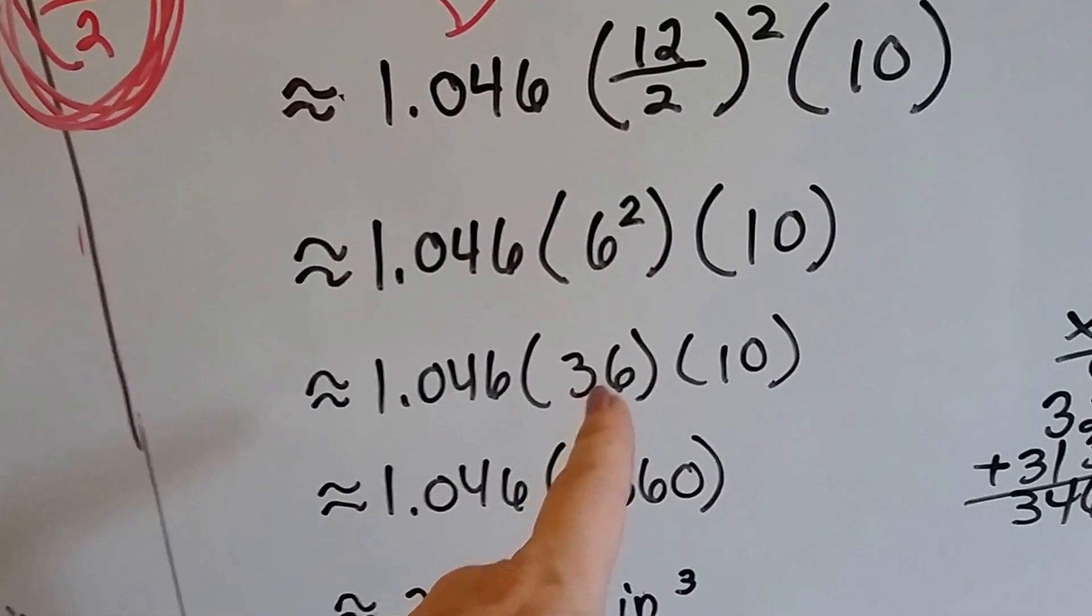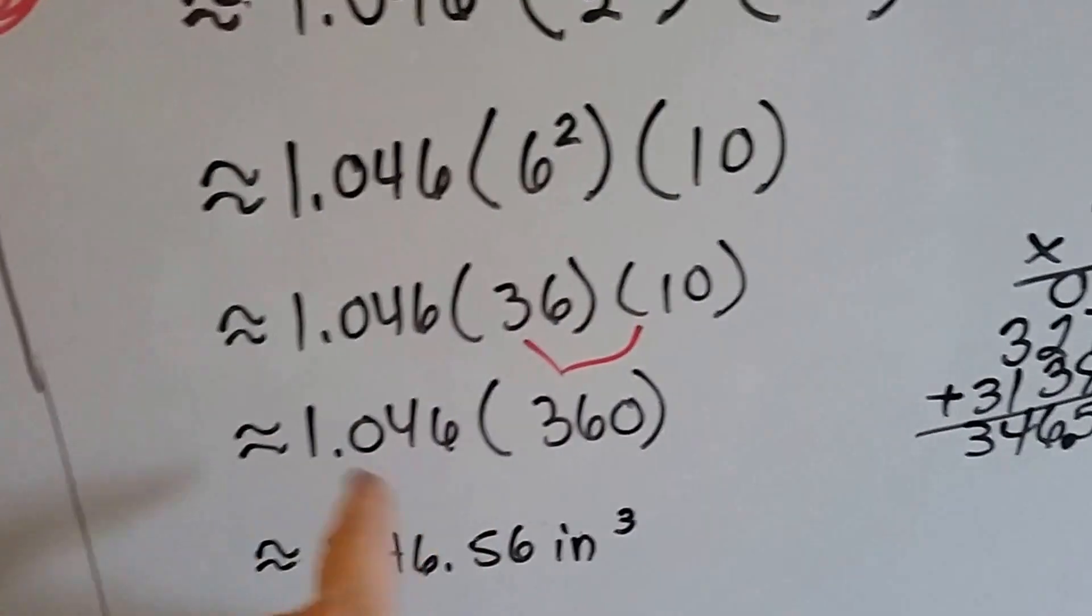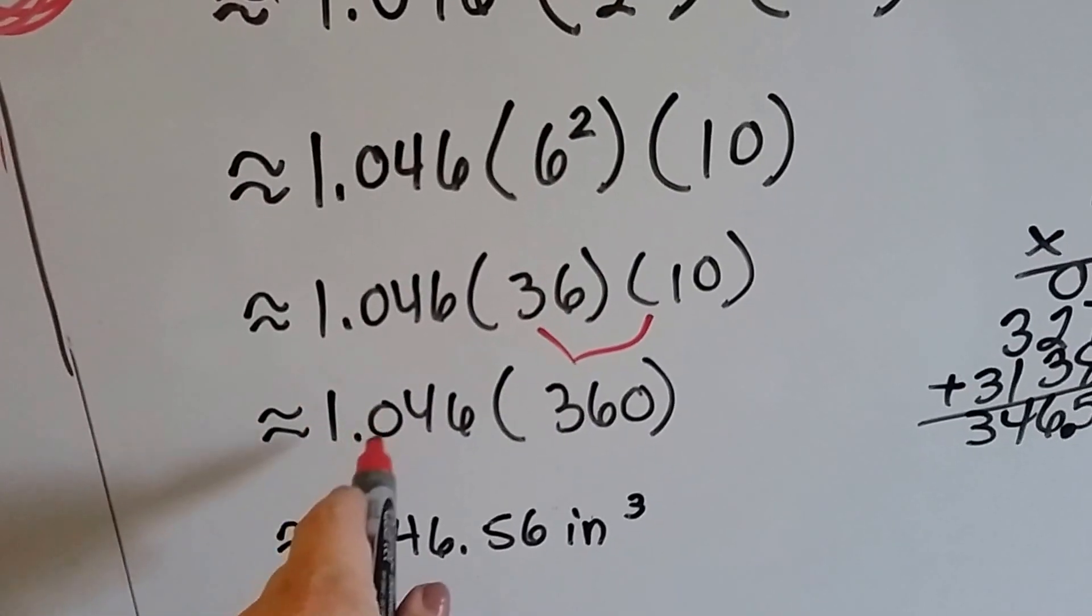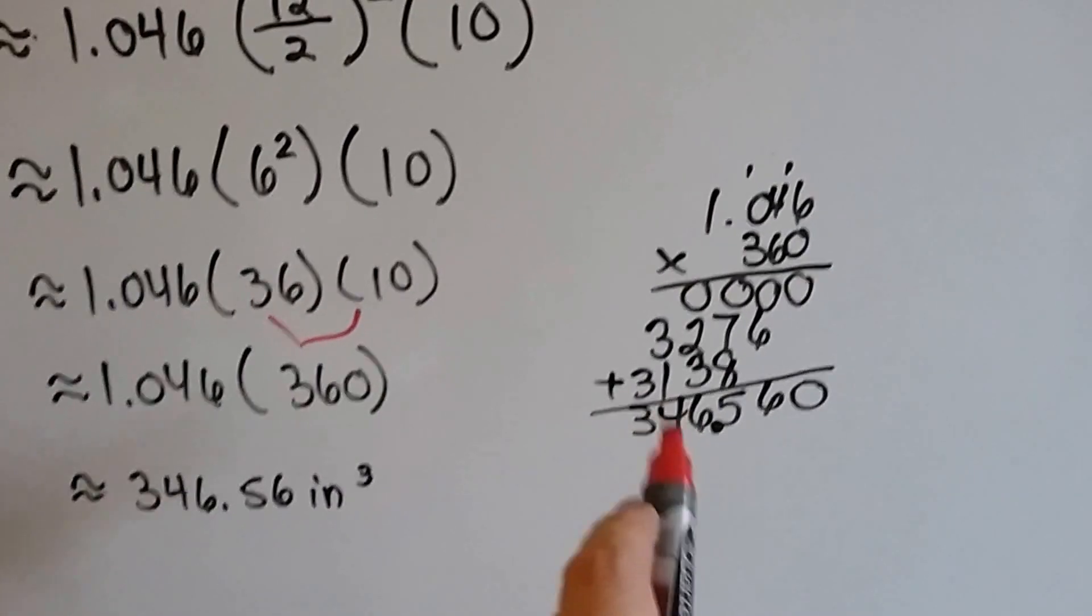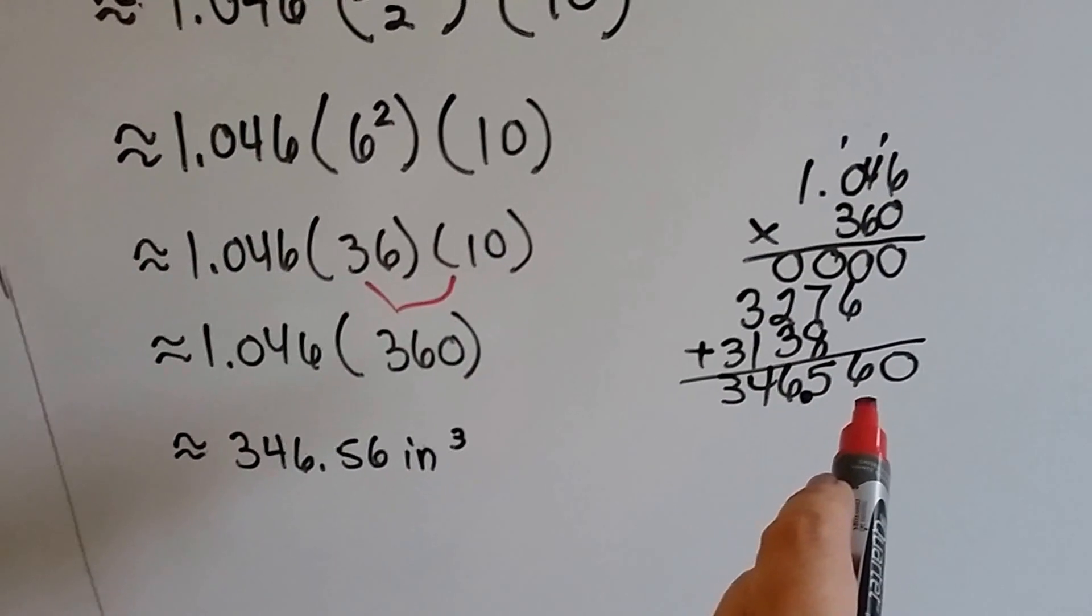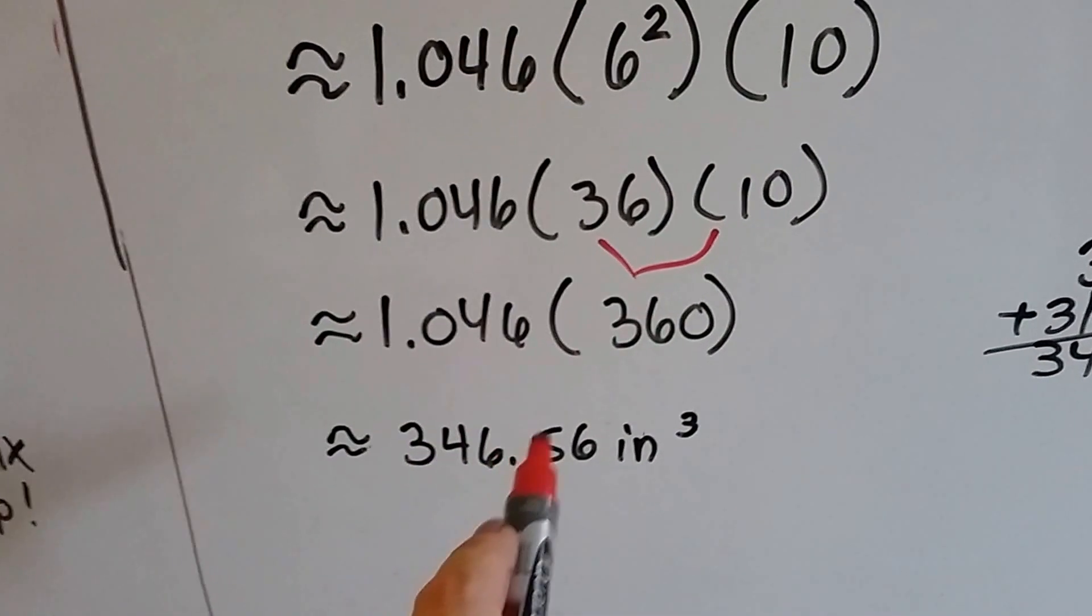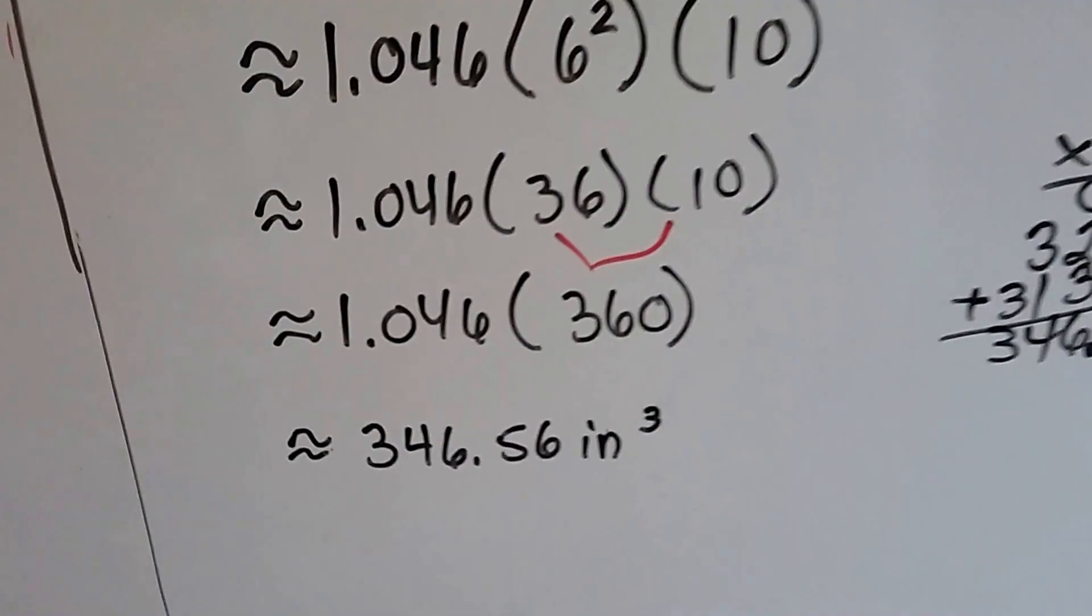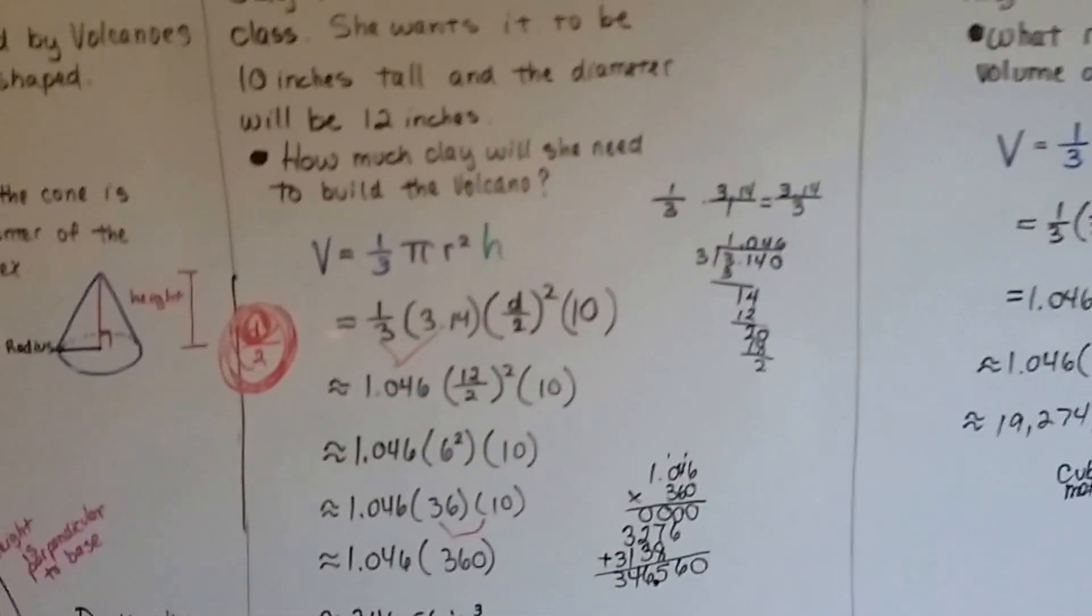6 times 6 is 36. We can multiply that by the 10 and get 360. And now we need to do the 1.046 times 360, and we do a little math on the side, and we get 346.56. So it's going to be 346.56 cubic inches of clay for Emma to make that volcano.